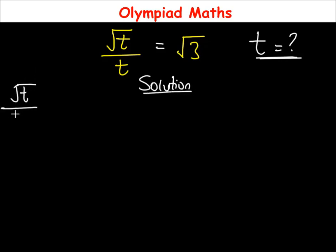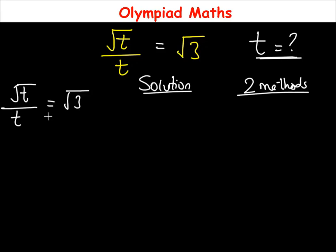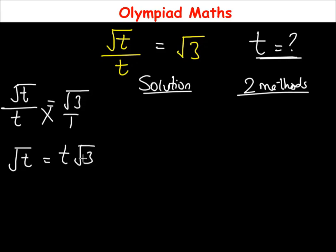There are two ways by which you can solve this equation, so we'll attempt to solve it using two methods. The first method: √3 can be written as √3 over 1, such that we can then cross multiply, and 1 multiplied by √t becomes √t equals t multiplied by √3, giving t√3.